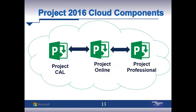Project Online is the central hub of data that gets published and distributed out to the views. And then Project Professional — what most of us know as the scheduling engine — is the powerful engine on the desktop for creating MPP files. Those files can be published into Project Online.